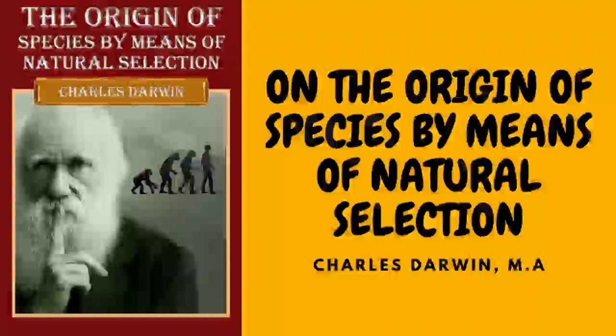Hence it has been argued that no deductions can be drawn from domestic races to species in a state of nature. I have in vain endeavored to discover on what decisive facts this statement has so often and so boldly been made. There would be great difficulty in proving its truth. We may safely conclude that very many of the most strongly marked domestic varieties could not possibly live in a wild state. In many cases we do not know what the aboriginal stock was, and so could not tell whether or not nearly perfect reversion had ensued. It would be quite necessary, in order to prevent the effects of intercrossing, that only a single variety should be turned loose in its new home.